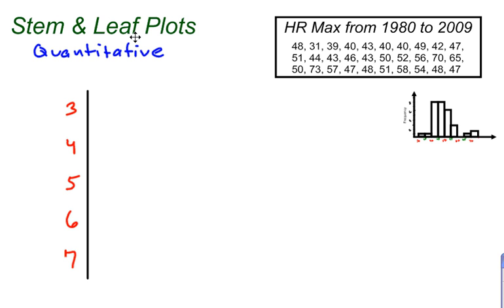Then we have the leaves. So where do the leaves go? Well, the leaves are the last digit of each one of these numbers. So here we go. Let's start with 48. 48, I would put an 8 right here. That tells anybody looking at this that I have a 48. Then we go to 31, so I'll put a 1 right here. And then 39, so I'm going to put a 9 right here.